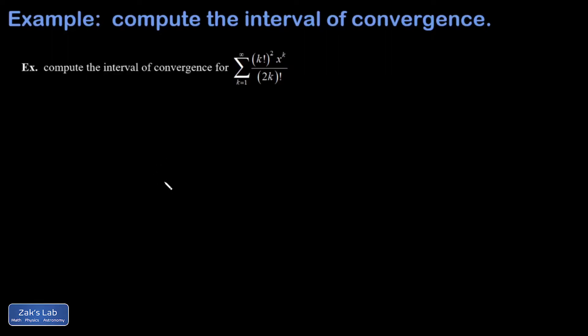In this example we want the interval of convergence of this pretty wild looking power series. There's factorials all over it, and the standard approach to this is to use the ratio test.